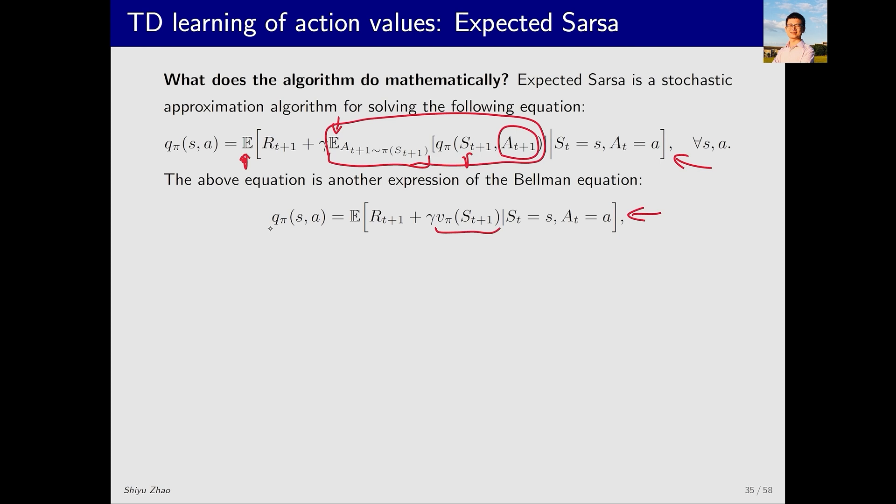This makes the equation clearer. Q pi SA equals the immediate reward plus gamma times the state value, all within an expectation. This is still a Bellman equation.